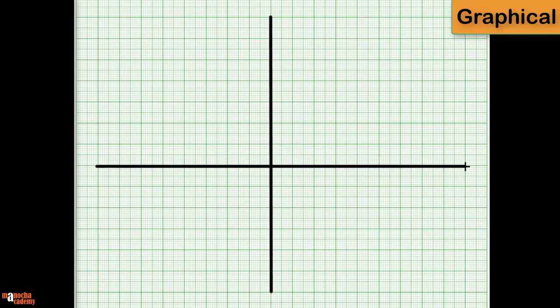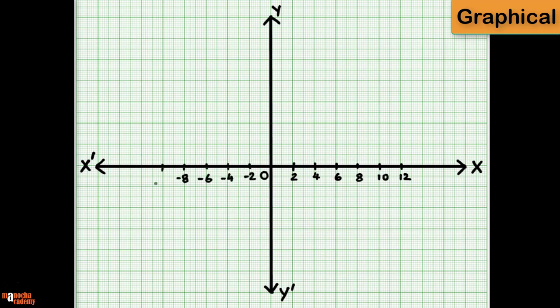First draw and label the two axes on the graph, xx dash and yy dash intersecting at O. Next, mark the positive and negative numbers on the axis. Since the space is less, I am just marking the even numbers: 2, 4, 6 and so on. Obviously, 1 is between 0 and 2, 3 is between 2 and 4 and so on.